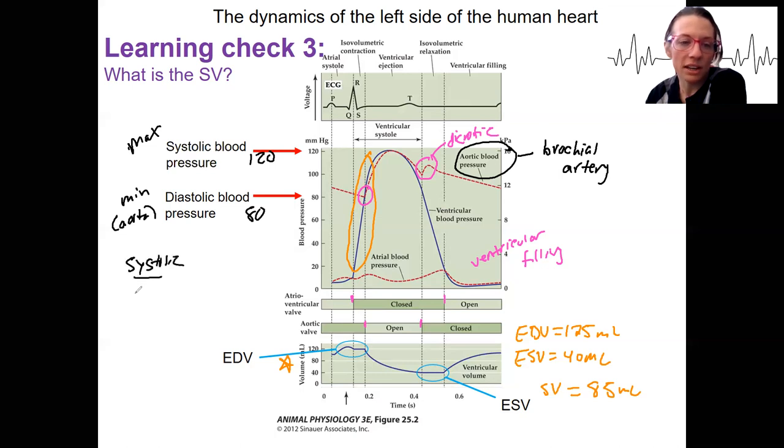Systolic over diastolic is how this is reported. And that's 120 over 80 in this individual. And that's a healthy blood pressure.